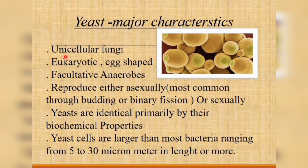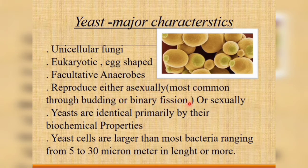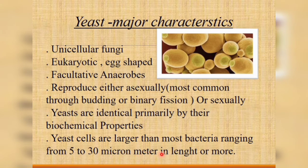Yeast major characteristics: yeast is a unicellular fungi, eukaryotic, egg-shaped, facultative anaerobe, reproduced either asexually — most commonly through budding or binary fission — or sexually. Yeast are identified primarily by their biochemical properties. Yeast cells are larger than most bacteria, ranging from 5 to 30 micrometers in length or more.